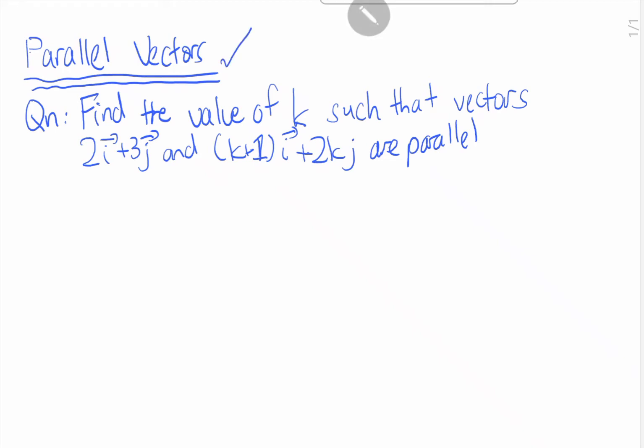So what does it mean by parallel vectors? Let's say we have an example here, where we have 2 vectors, 2i plus 3j and (k+1)i plus 2kj. We will have to find the value of k such that both of these vectors are parallel. So what does it mean by parallel?